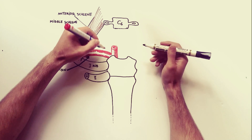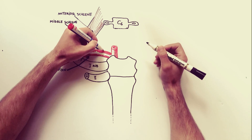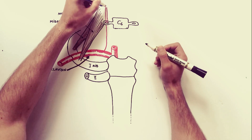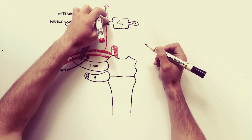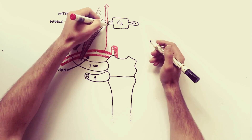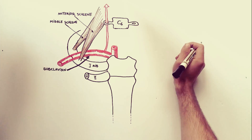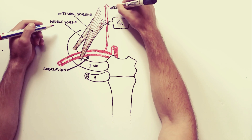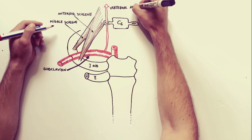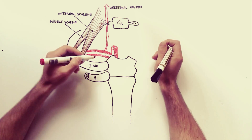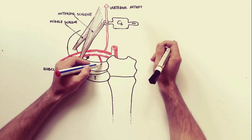We will now indicate the branches of the subclavian artery, starting with the vertebral artery. The vertebral artery is the first and largest branch of the subclavian artery. It runs vertically upwards to enter the foramen transversarium of the transverse process of C6, then passes through the foramen transversaria of the upper six cervical vertebrae, finally entering the cranial cavity through the foramen magnum.